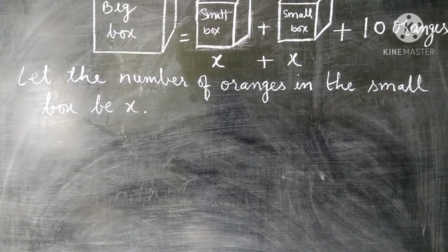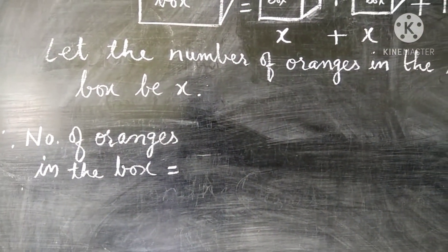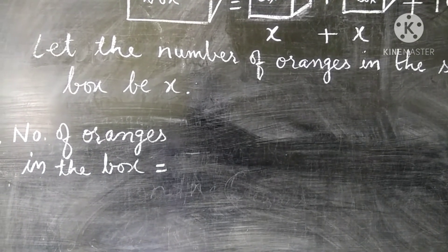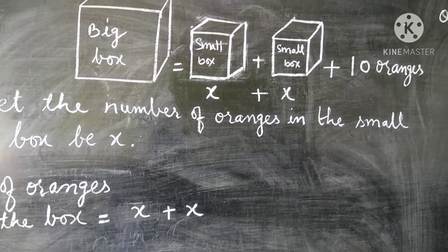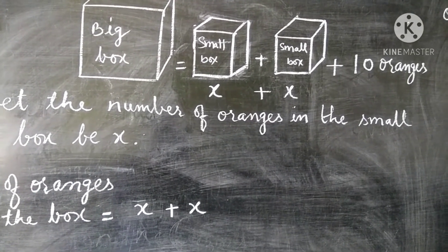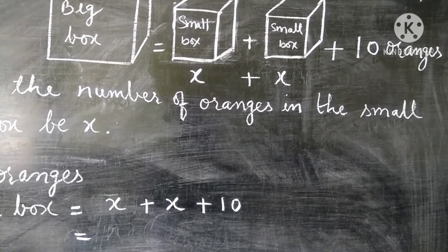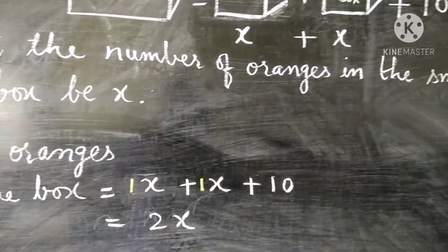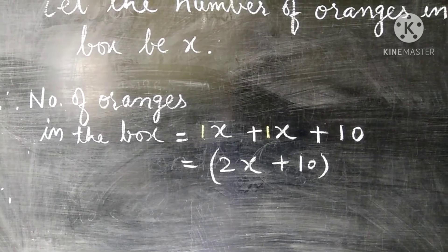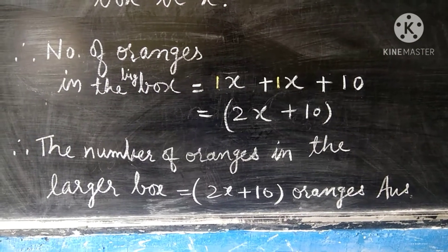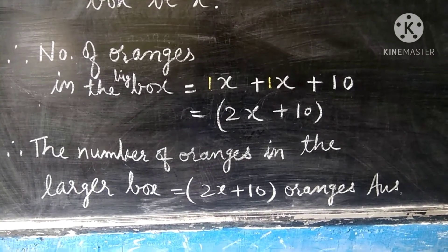Let the number of oranges in the small box be x. Number of oranges in the big box is equal to: x oranges from the first box, plus x oranges from the second box, plus ten oranges which are still remaining outside. One small box plus one small box equals two times x, so we write 2x plus 10. Therefore, the number of oranges in the larger box is equal to 2x plus 10 oranges. This is our answer.